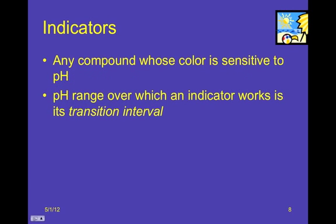And the pH range over which an indicator changes is called a very tricky wording, transition interval. The range over which it changes. I told you guys, chemists are not real creative when it comes to naming stuff.